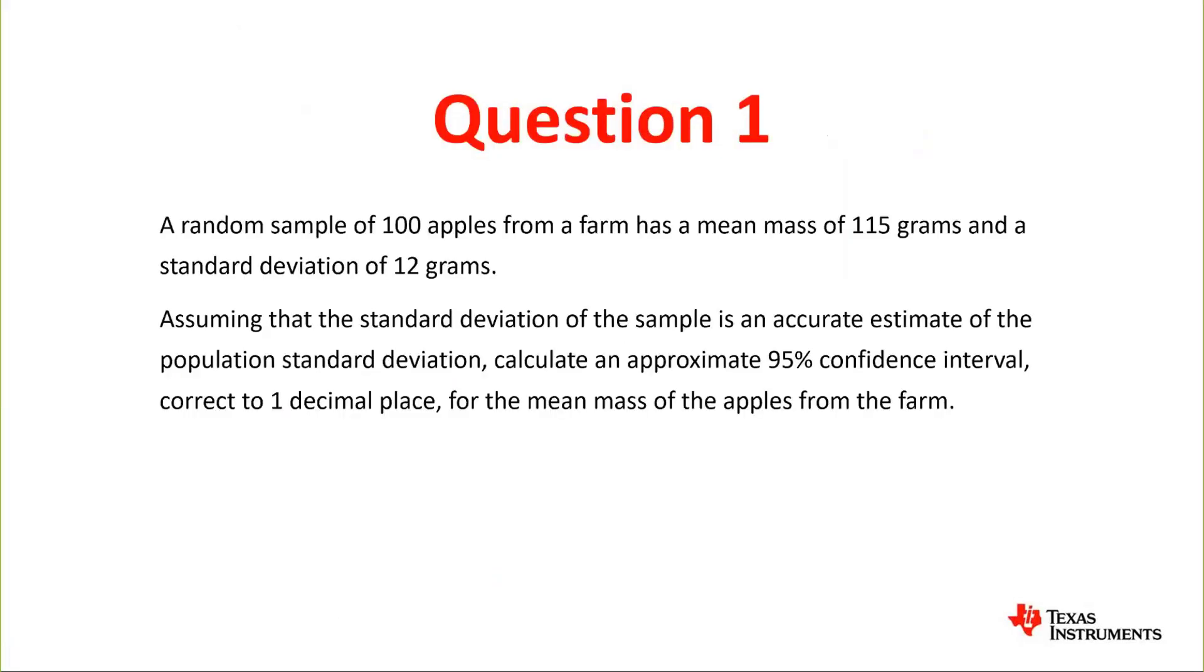In this video we'll be looking at confidence intervals. A random sample of 100 apples from a farm has a mean mass of 115 grams and a standard deviation of 12 grams. Assuming that the standard deviation of the sample is an accurate estimate of the population standard deviation, calculate an approximate 95% confidence interval correct to one decimal place for the mean mass of the apples from the farm.